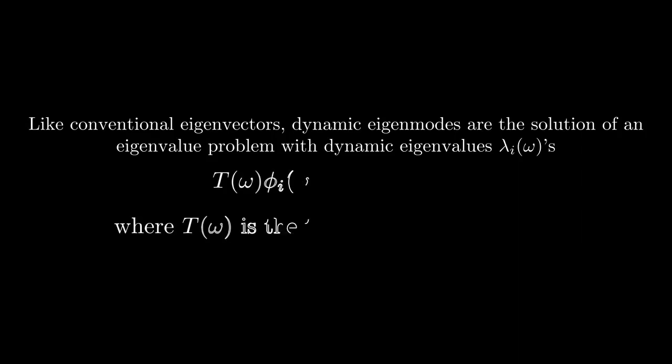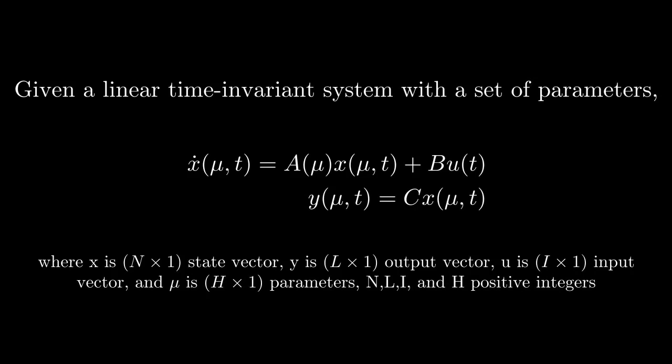Computing dynamic eigenvectors is very similar to the conventional eigenvectors. They come as a result of solving an eigenvalue problem in the frequency domain for the transfer function matrix. In order to find our transfer function matrix, we need first a state space representation of our system. For the purposes of the mass-spring damper, we have a linear time-invariant system. However, we are changing parameters. So here we see our state x, output y, and input u, with parameter variation accounted for in mu.